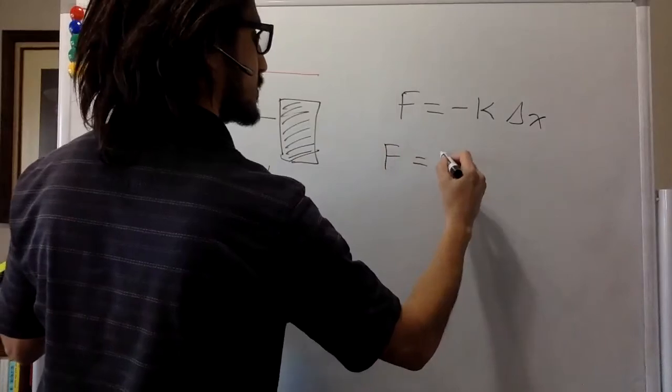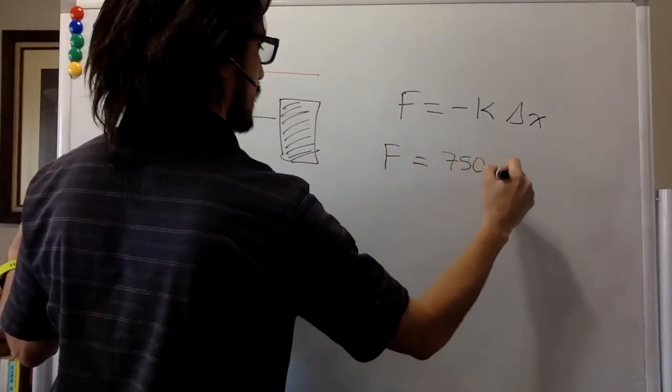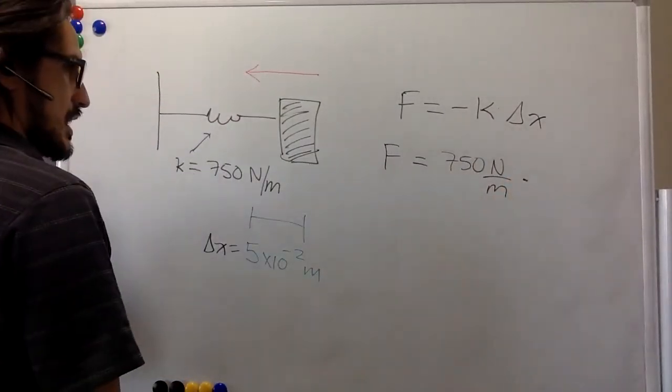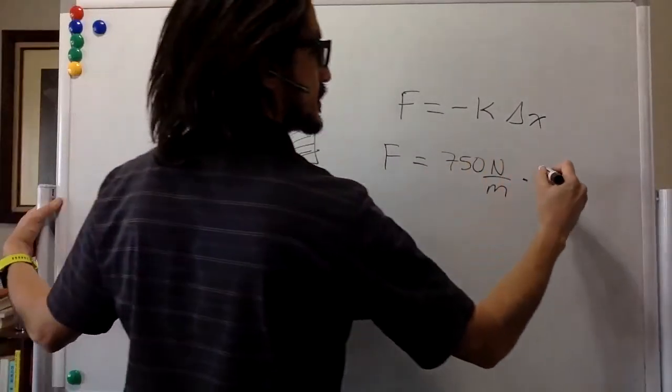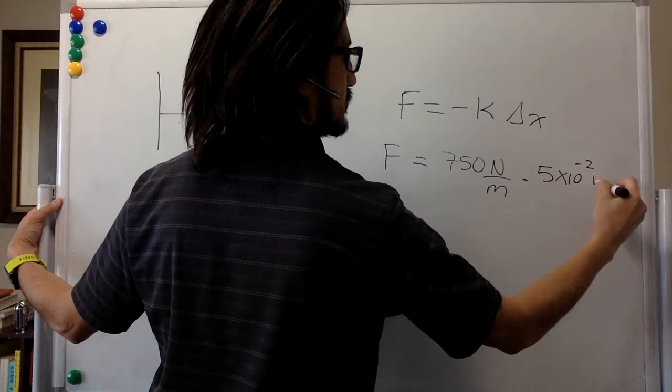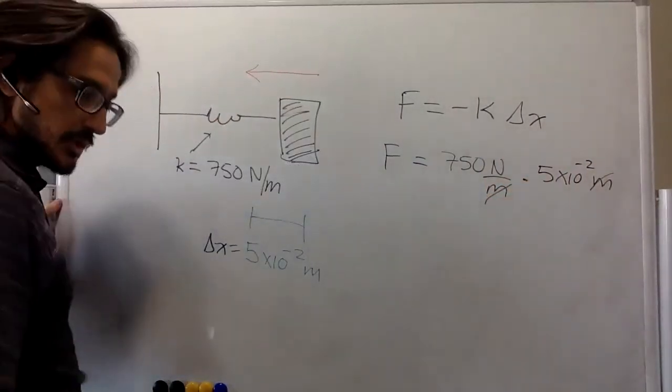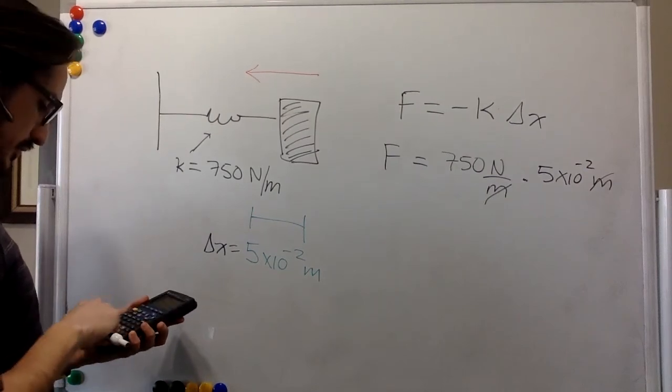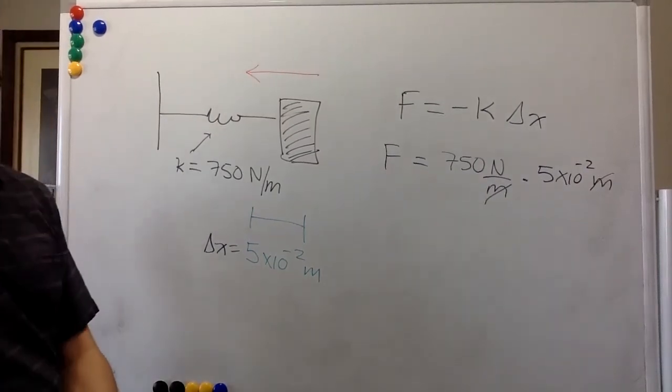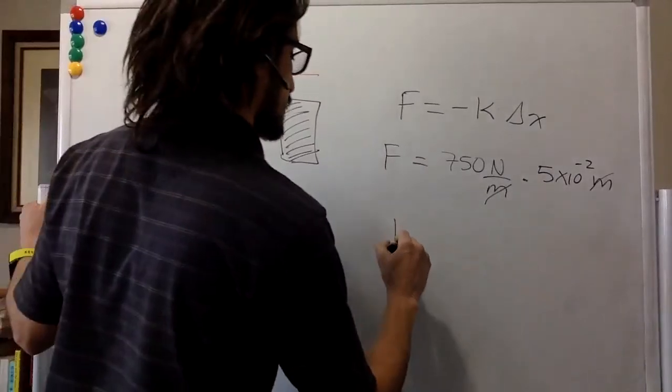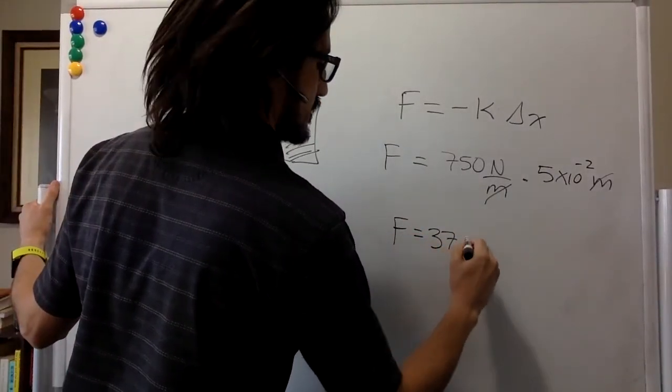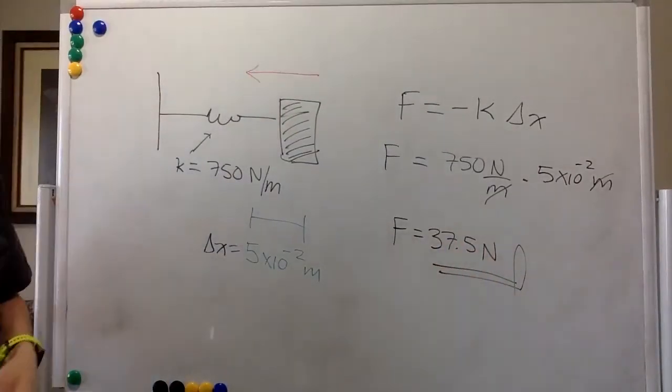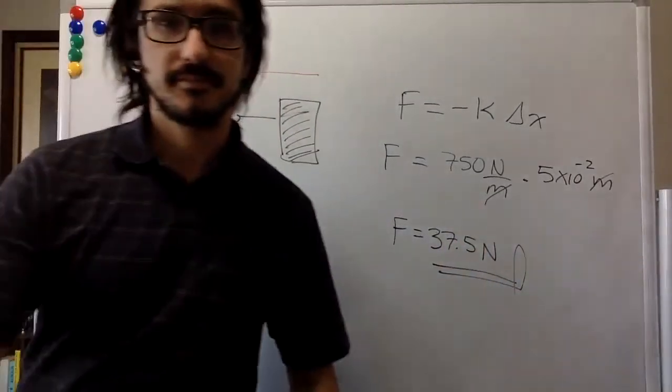So just the magnitude is going to be the 750 newtons per meter times 5 times 10 to the negative 2 meters. We can cancel the meters out and we get 750 times 5 times 10 to the negative 2, 37.5 newtons. So that's it, ACPC. Thank you.